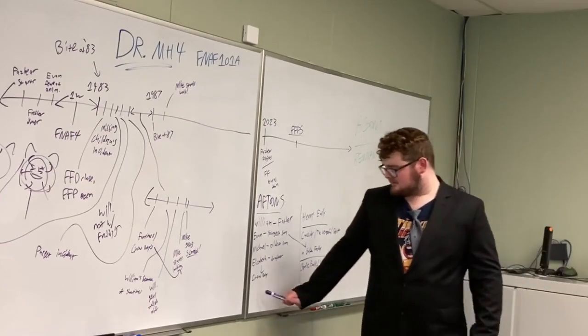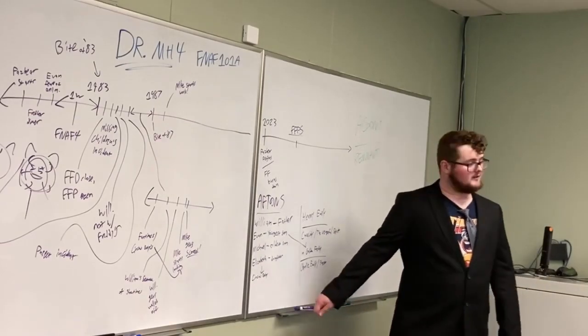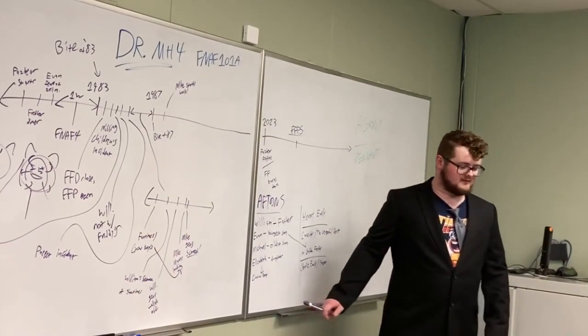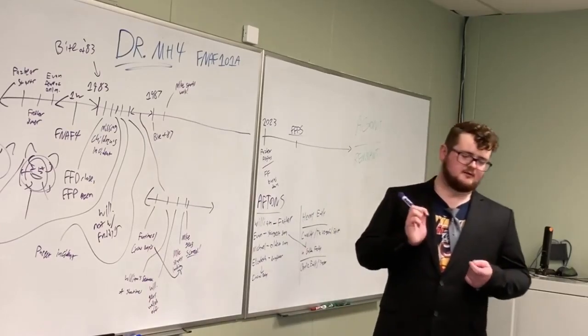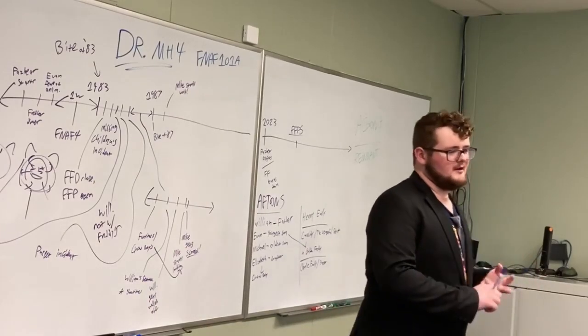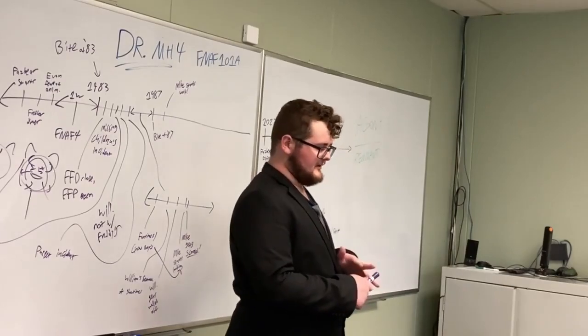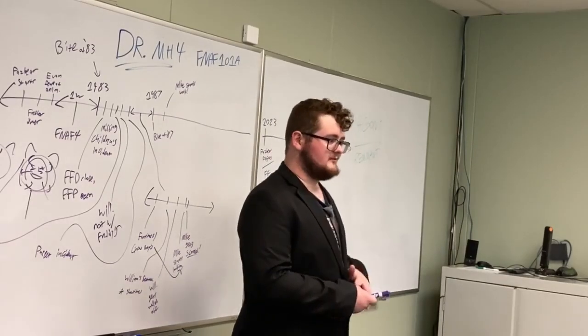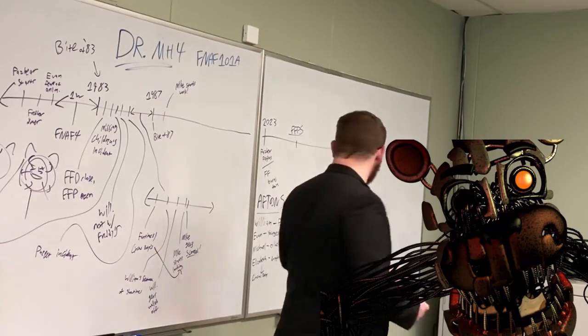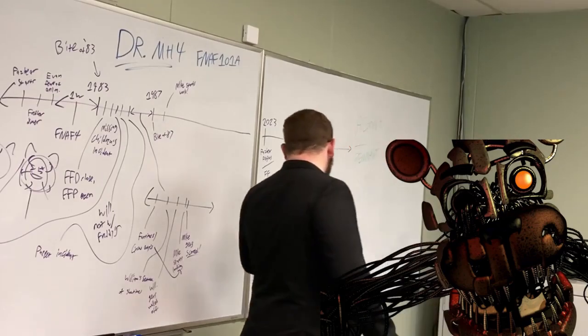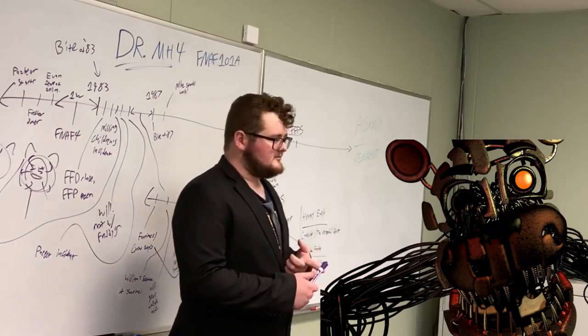Which means only Funtime Freddy, Ballora, and Funtime Foxy were left in Ennard. And they rebranded themselves as Molten Freddy. And so, you have Molten Freddy, which is those three animatronics. You have Scrap Trap. You have Scrap Baby, which is Baby who reassembled herself from scrap.